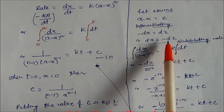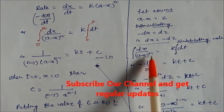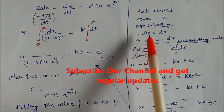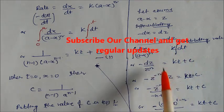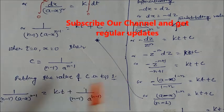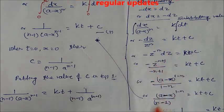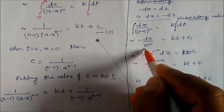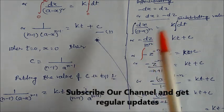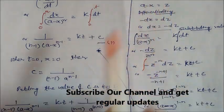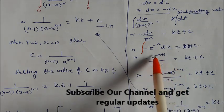Substituting: dx becomes minus dz and (a minus x) becomes z to the power n. After integrating, you get minus z to the power (minus n+1) divided by (1 minus n), plus kt plus constant c. Substituting back z equal to (a minus x), you get the expression in terms of (a minus x) to the power (1 minus n).